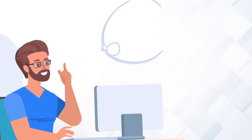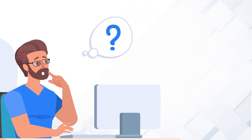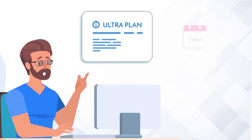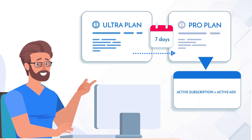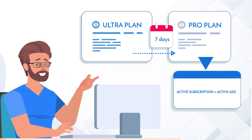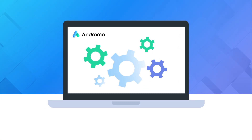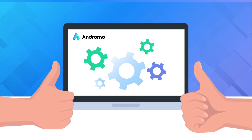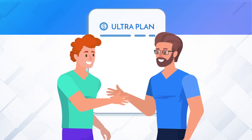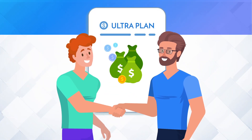If you forget to refill your impressions budget, your monetization will work in pro mode after 7 days until your subscription is active. Everything happens automatically and you don't need to worry. Choose the Ultra Plan and grow your income.